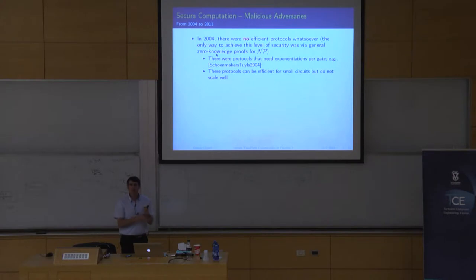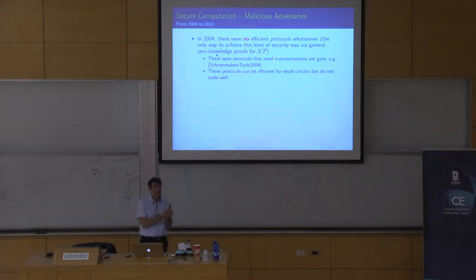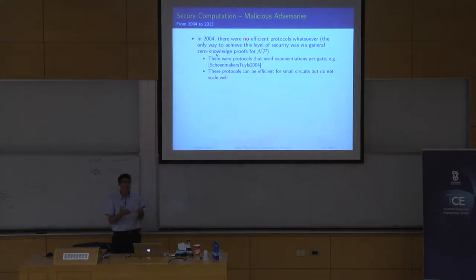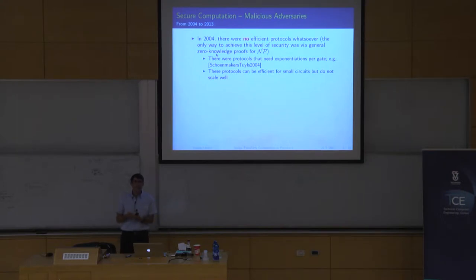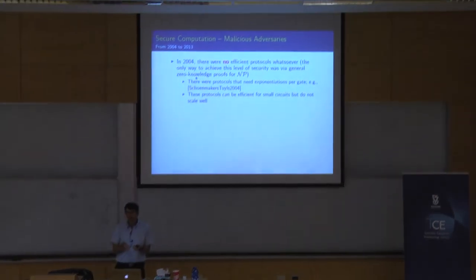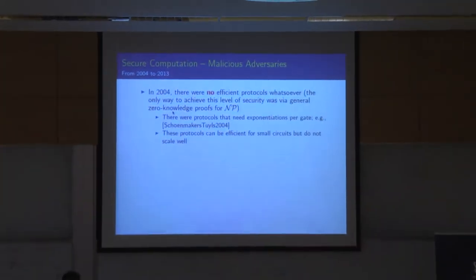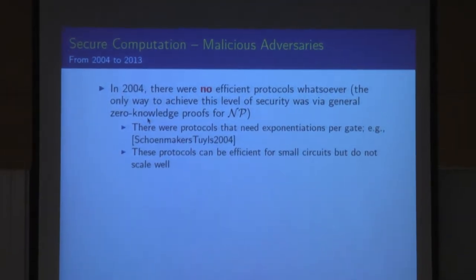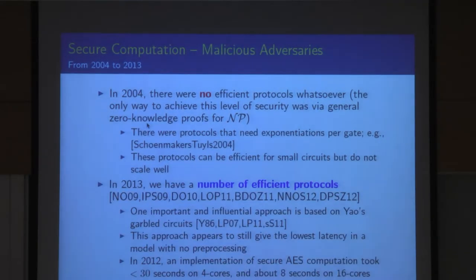In 2004, the first protocol that came out required exponentiations per gate — like 10 to 15 exponentiations per gate — which back then was bad, and today is still bad. It's not something you can use to do large computations. This is obviously a big barrier to doing this in practice, because in practice we need security for malicious adversaries.